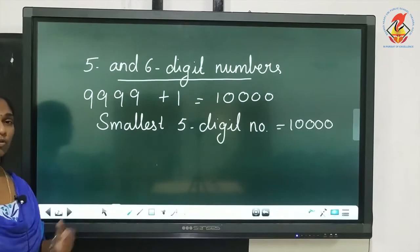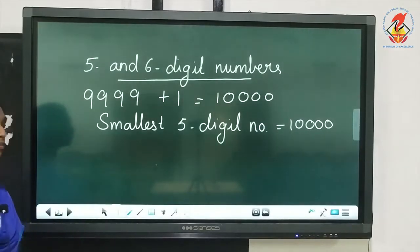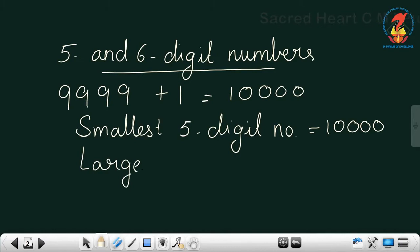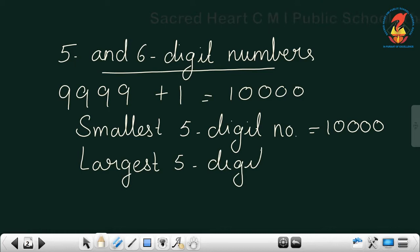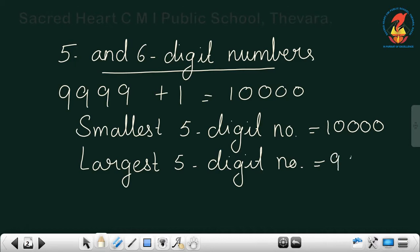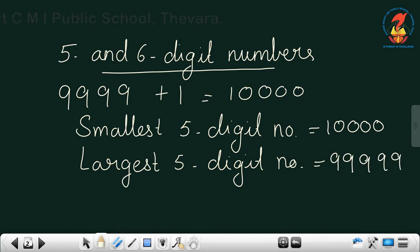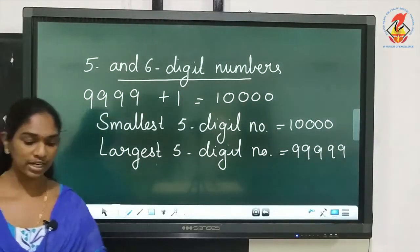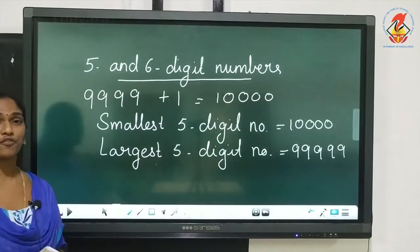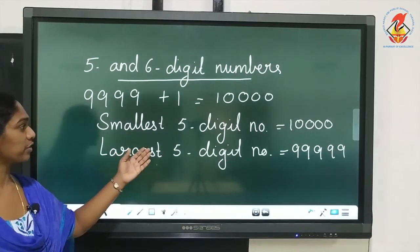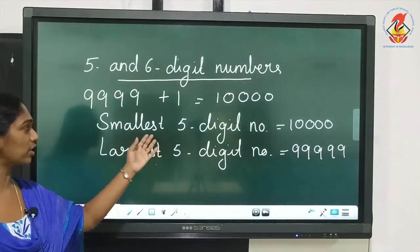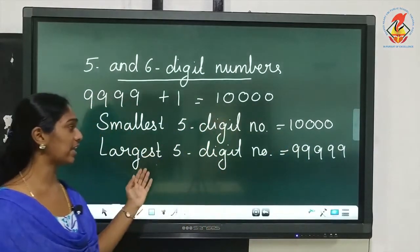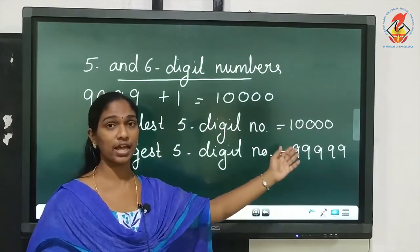Can you tell me what will be the largest 5 digit number? Yes, 99,999 is the largest 5 digit number. So we have the smallest 5 digit number as 10,000 and the largest 5 digit number as 99,999.